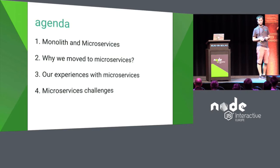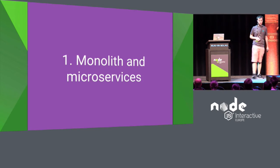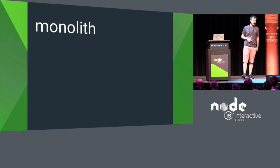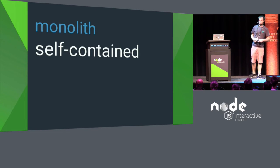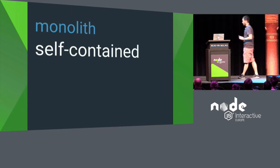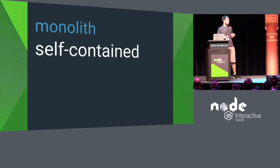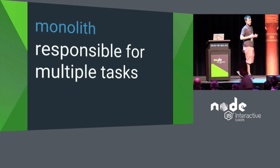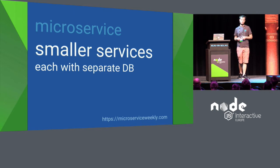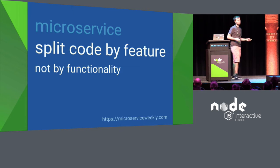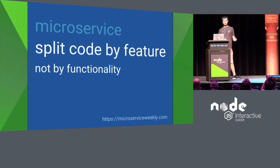In a nutshell, we call something a monolith when it's self-contained — it can work independently from other applications and is responsible for multiple tasks, with one process doing multiple things. Microservices, by contrast, are smaller services usually with separated databases, and we split the code more by features instead of functionality.